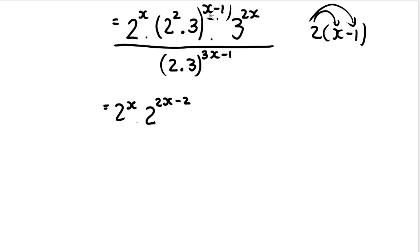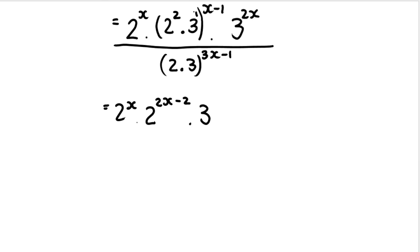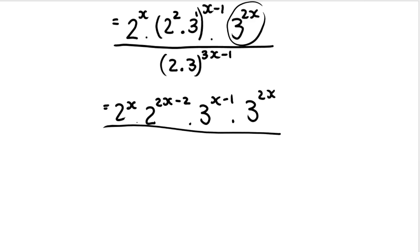Then we have to do it again, but with the three. The three over here is also raised to an exponent of one. So it's going to be three: one multiplied by x is x, and one multiplied by negative one is minus one. Then we just carry down three to the power of 2x and apply the same rules at the bottom. This two has an invisible one; this three has an invisible one. You do power inside multiplied by power outside. So it's going to be two to the power of 3x minus one, and three to the power of 3x minus one.